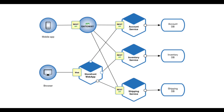In this example, a mobile application uses a REST API to hit an API gateway, which routes to an account service that gets data from an account database. The API gateway can also hit an inventory service hitting an inventory database, and a shipping service hitting a shipping database. The API gateway handles routing — you don't care where the request has to go. Through a browser you can do the same thing with a storefront web app.